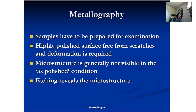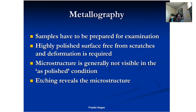Samples have to be prepared for examination. Typically a highly polished surface free from scratches and deformation is required — you don't want artifacts introduced into your specimen. I'll have an example of an artifact that didn't come from the preparation but came from instrumentation in this lecture. Microstructure is generally not visible in the as-polished condition, and you typically have to etch. We've talked about why etchants work the way they do in the previous lecture.